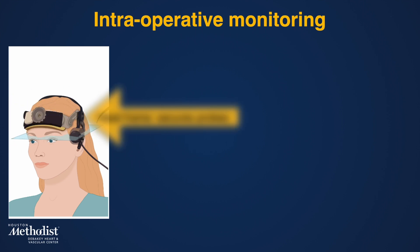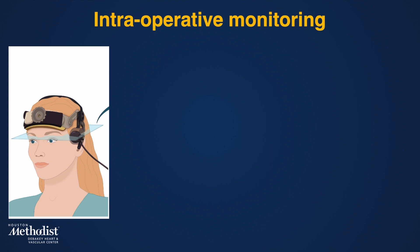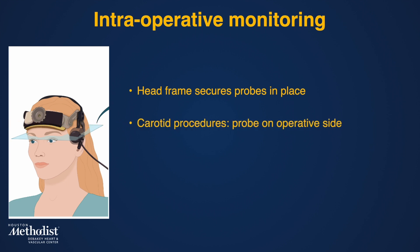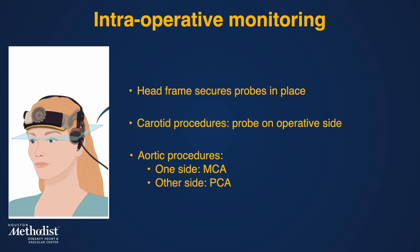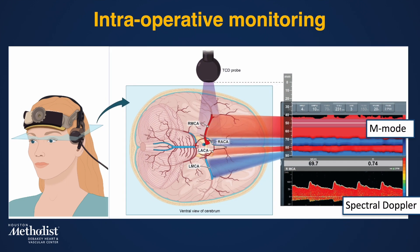The head frame ensures that the ultrasound probes used to insonate the cerebral arteries remain in place throughout the intervention. Because of the positioning of the head during carotid procedures, in most cases we only monitor on the operative side. Aortic procedures do not require a head turn in most cases; therefore, we often monitor the MCA on one side and the PCA on the other side. The TCD monitor will continue to display the M-Mode and the spectral Doppler signal.